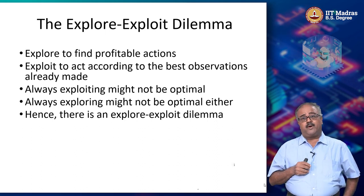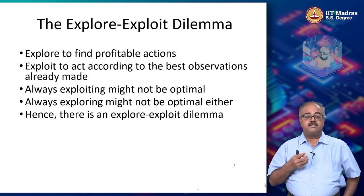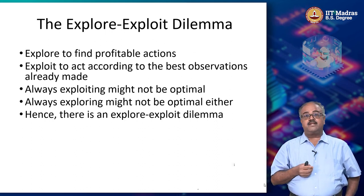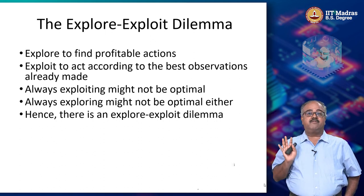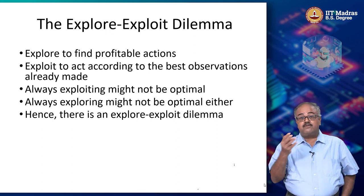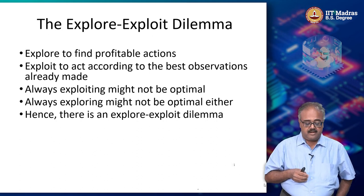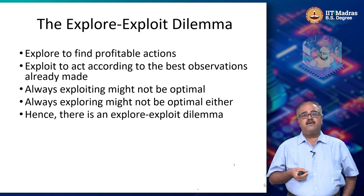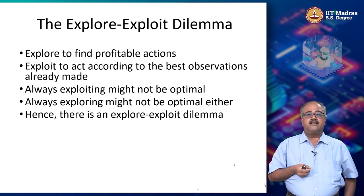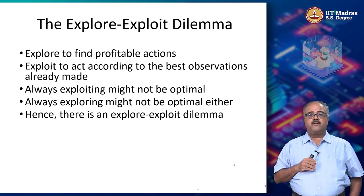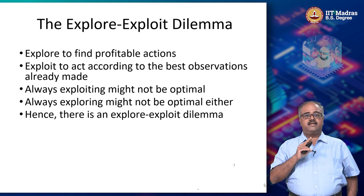Always exploiting might not be optimal — there might be a better solution. You might have found a sequence of moves that lets you win 40 percent of tic-tac-toe games, but there might be another sequence that lets you win 100 percent. If you are happy with 40, you will not find out about the 100 percent. Similarly, always exploring is not going to be optimal either — after you have found out what is the right way to behave, if you still keep trying out different ways, that is not going to work. So, when do I stop exploring and when do I start exploiting? I should not do it too early, and I should not keep exploring too long. This is the trade-off we have to look at.